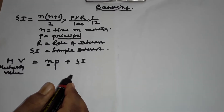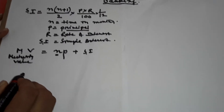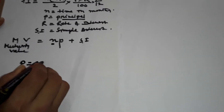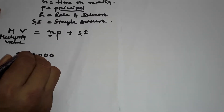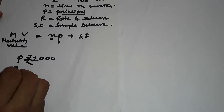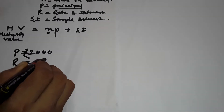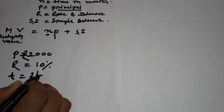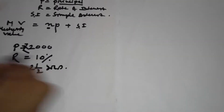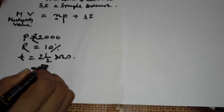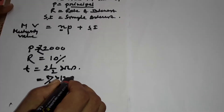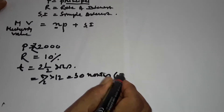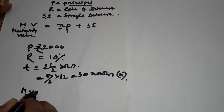For example, suppose someone deposits ₹2000 per month at a rate of interest of 10%, for a time of 2 and 1/2 years, that is 5/2 × 12 = 30 months. Find the maturity value.